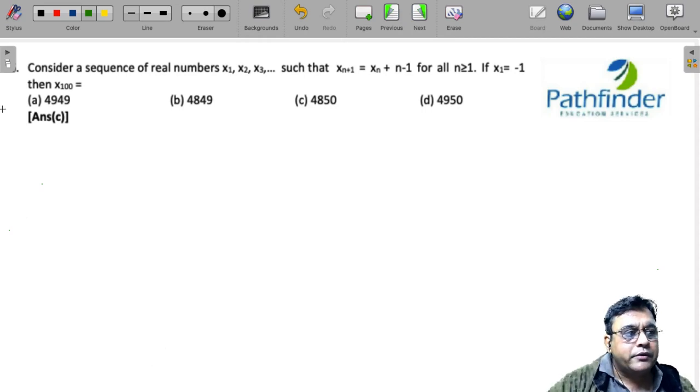CAT 2021 slot 3, quantitative aptitude, question number 16. Consider a sequence of real numbers x1, x2, x3 such that x(n+1) = x(n) + n - 1 for all n ≥ 1. If x1 = -1, then x100 is equal to what? So how do you go about solving that question?